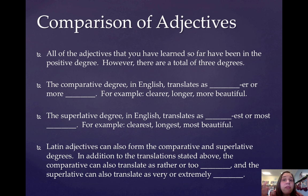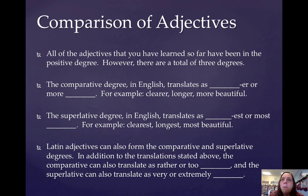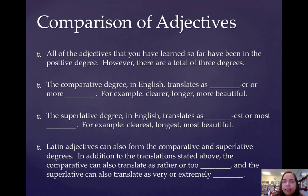There are a total of three degrees: positive, comparative, and superlative. The comparative degree in English translates as blanker or more blank — so faster or more beautiful, clearer, longer, things like that. The superlative degree in English translates as blankest or most blank — so clearest, longest, or most beautiful.